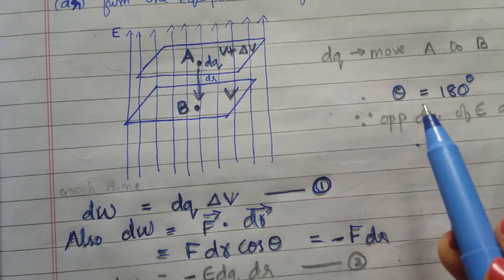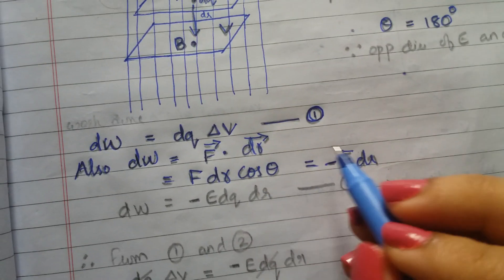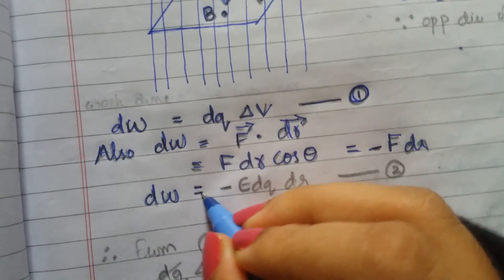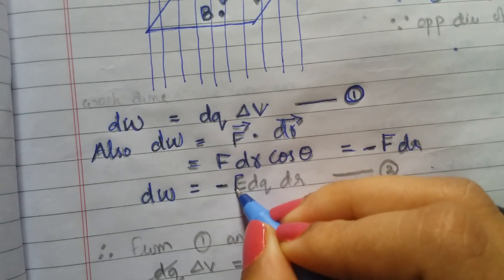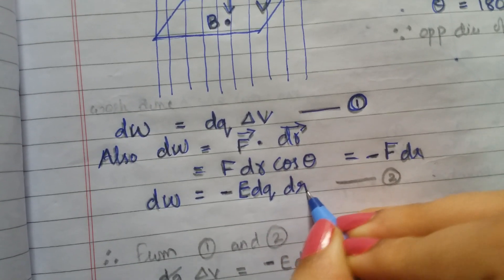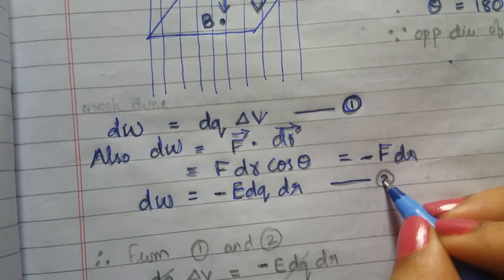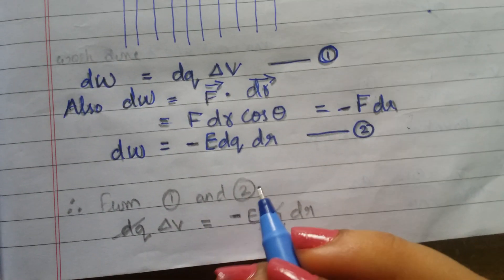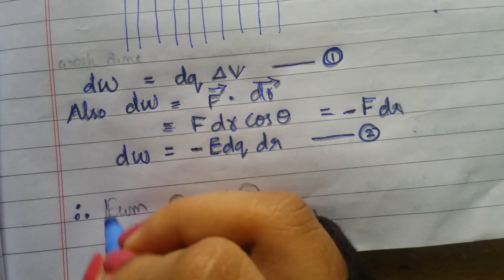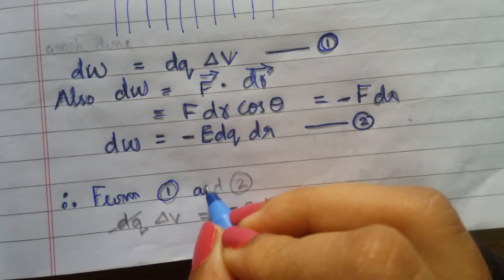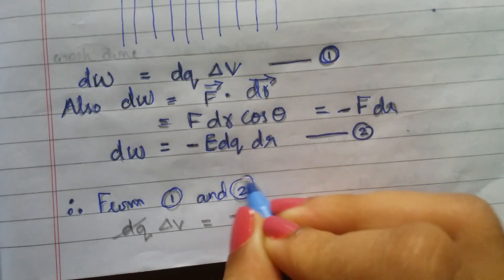Since cos 180 equals minus 1, the work done dW equals minus F·dr. Substituting F as E·dq, we get dW equals minus E·dq·dr. This is equation number two.